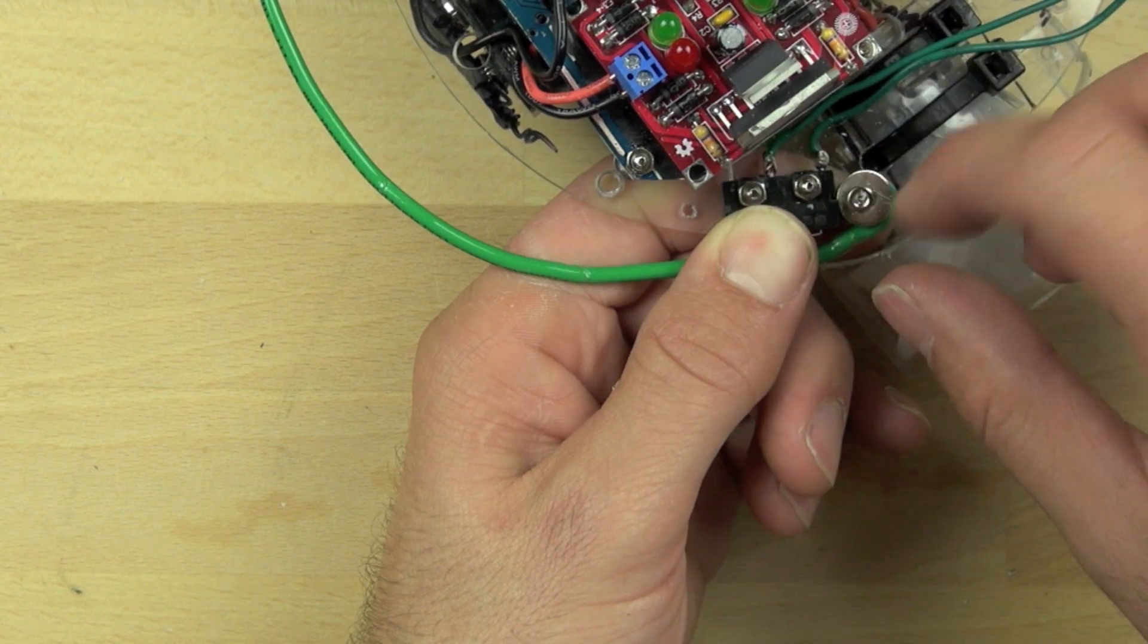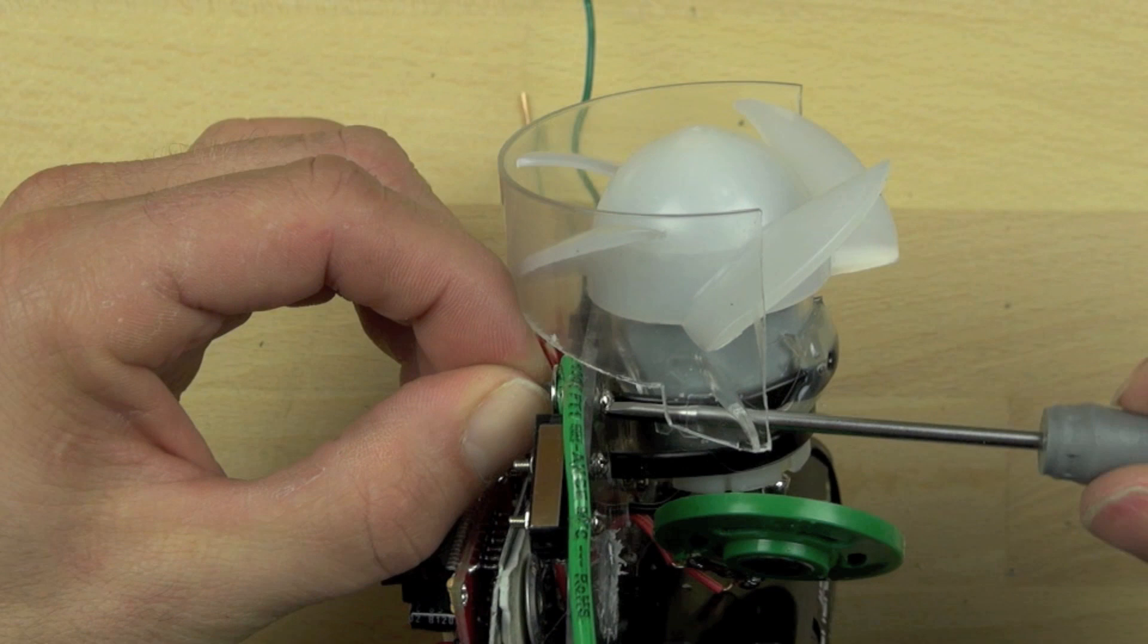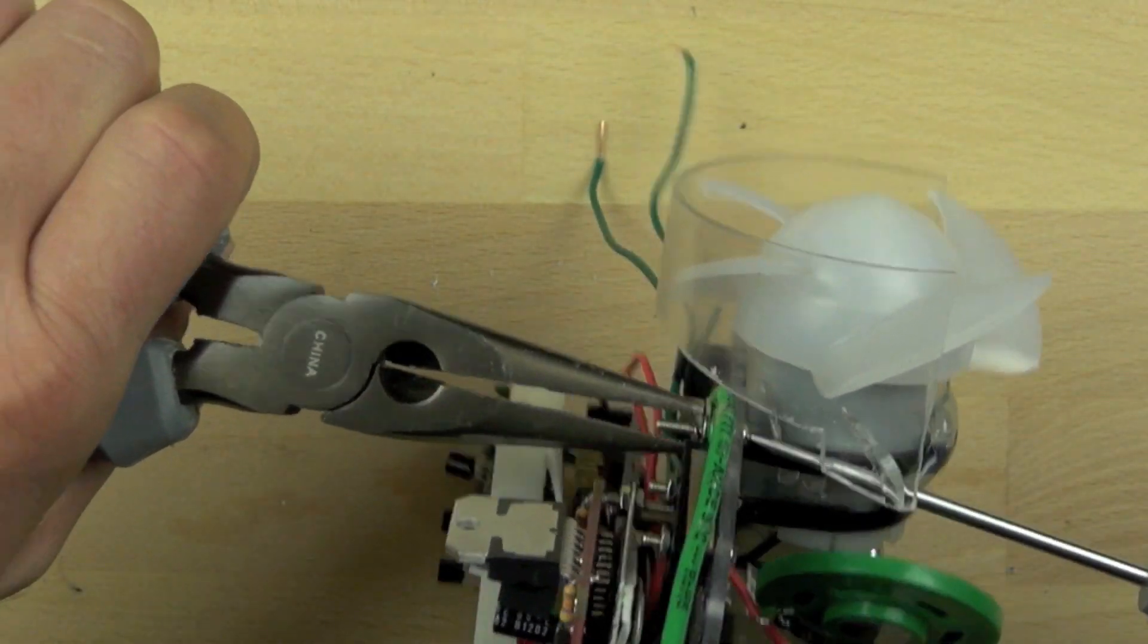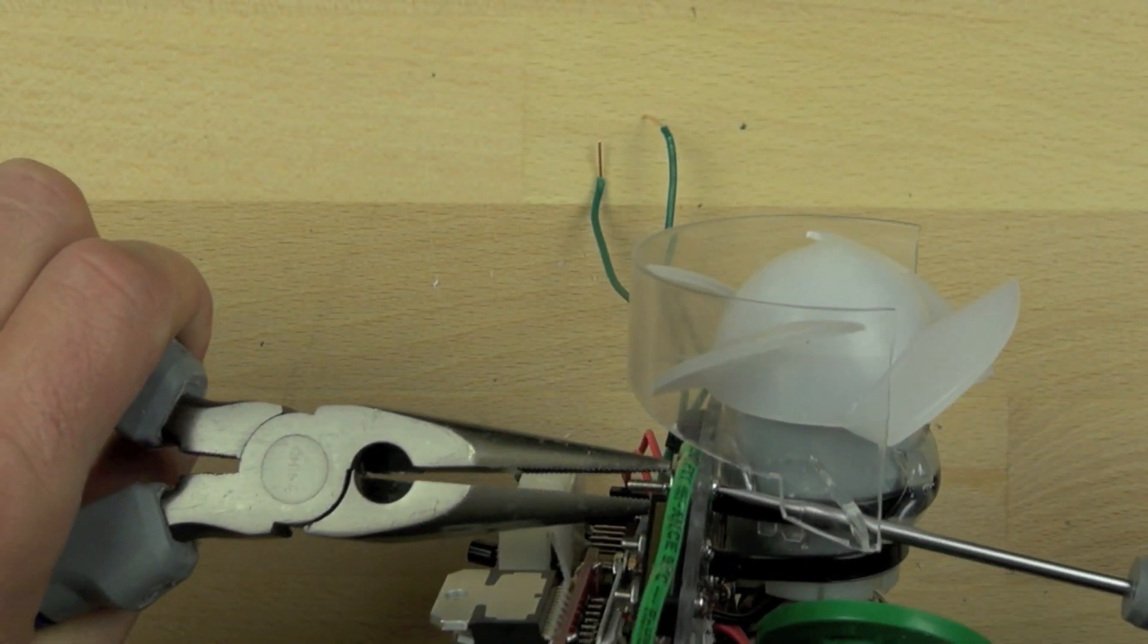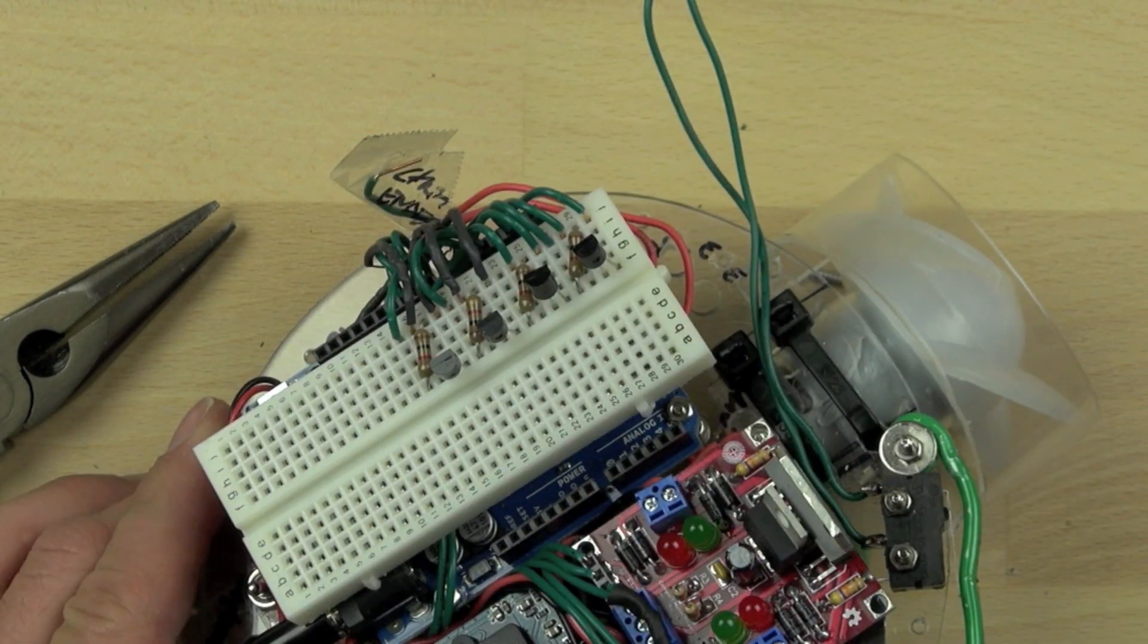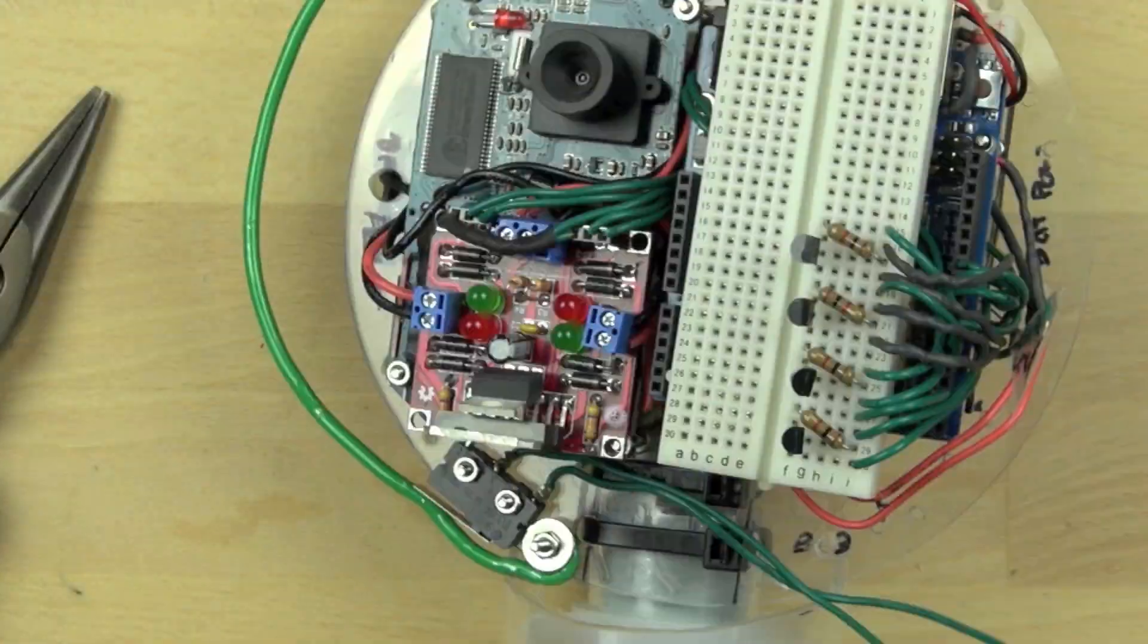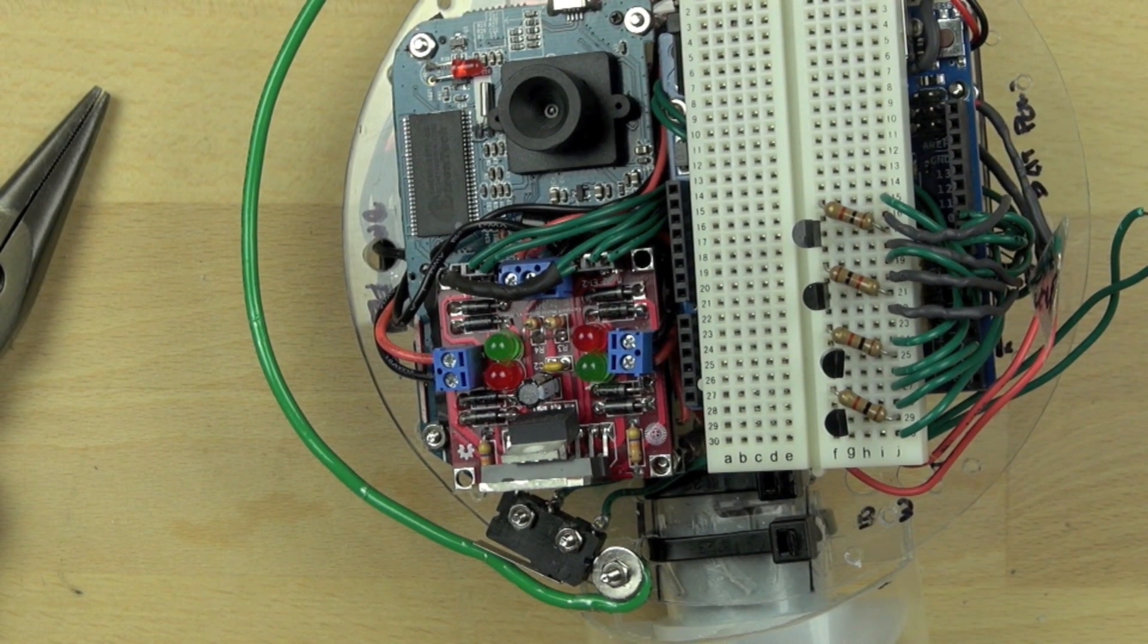We're just going to get our bolt there and tighten that down. It's really important that the nut and bolt and the washer that are holding that wire in place are tightened very tightly. Because if the wire slips, it won't return to its location. It'll just sort of move and hold the switch down. You want to make sure that the bolt is really tight so that the wire returns to its original location.